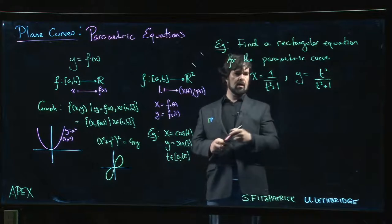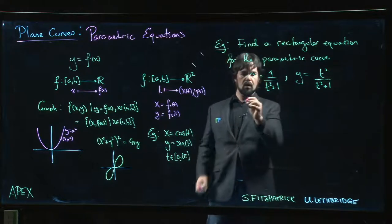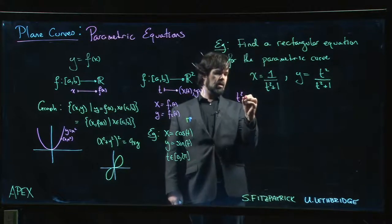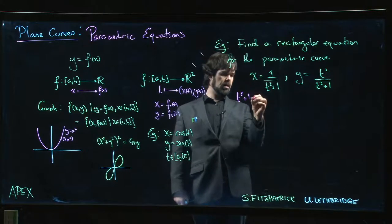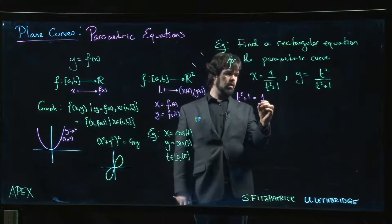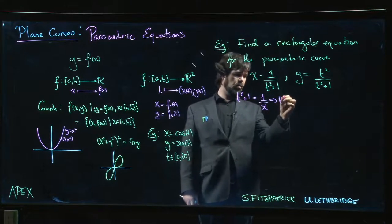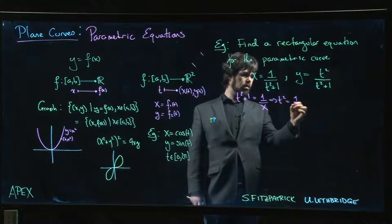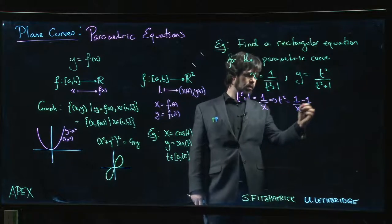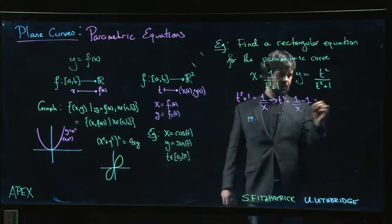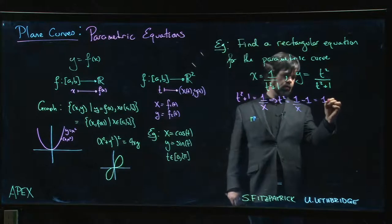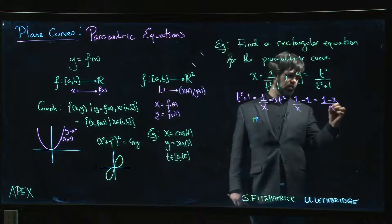From here we can see that t squared plus 1, just sort of cross multiply, t squared plus 1 is 1 over x. So that means that t squared is 1 over x minus 1, and we could write that with a common denominator as 1 minus x over x.